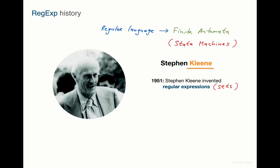The equivalence of regular expressions and finite automata is known as Kleene's theorem. By the way, the well-known star operator, which stands for repetition of a pattern zero or more times, is known as the Kleene star or the Kleene closure operator, as we will see further in this class.